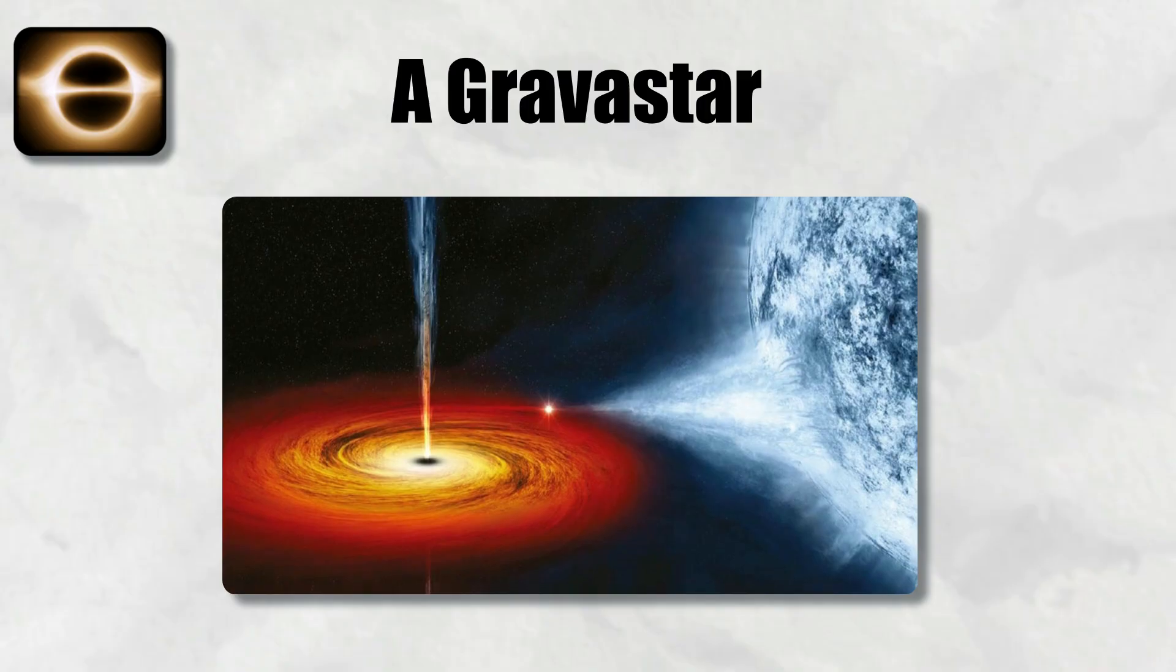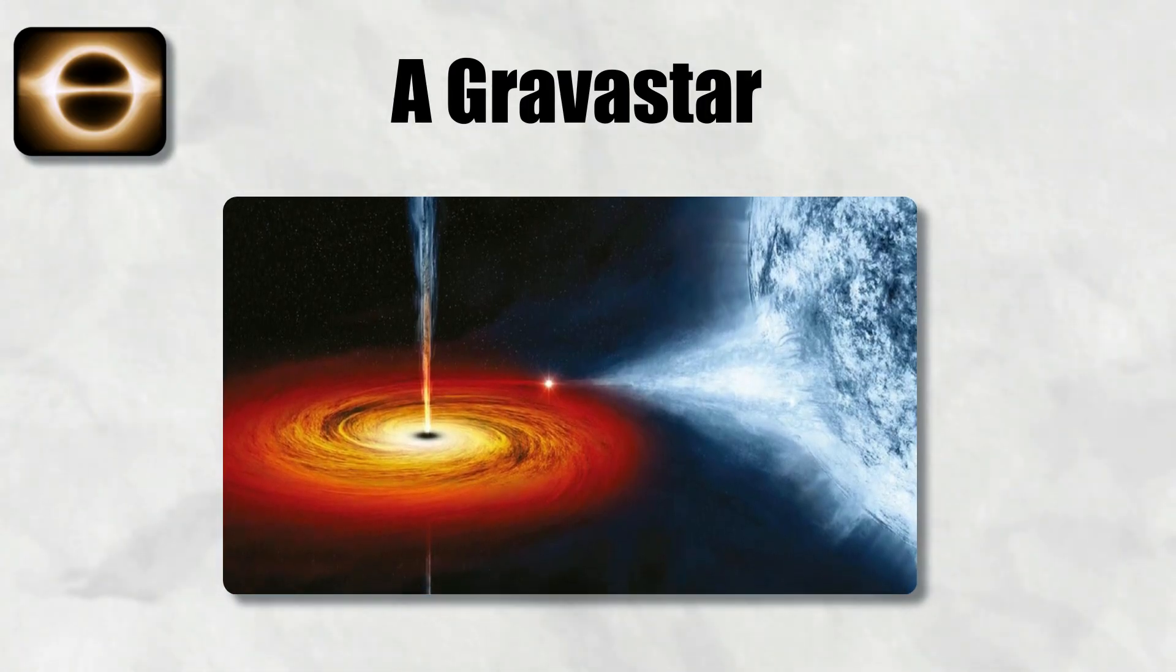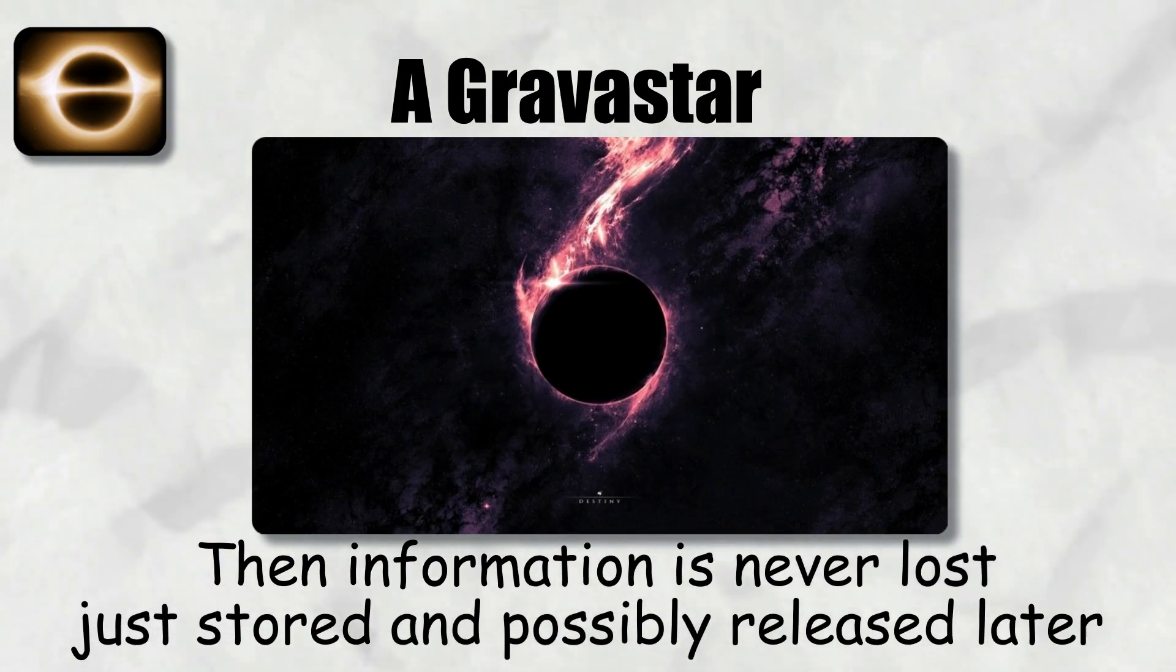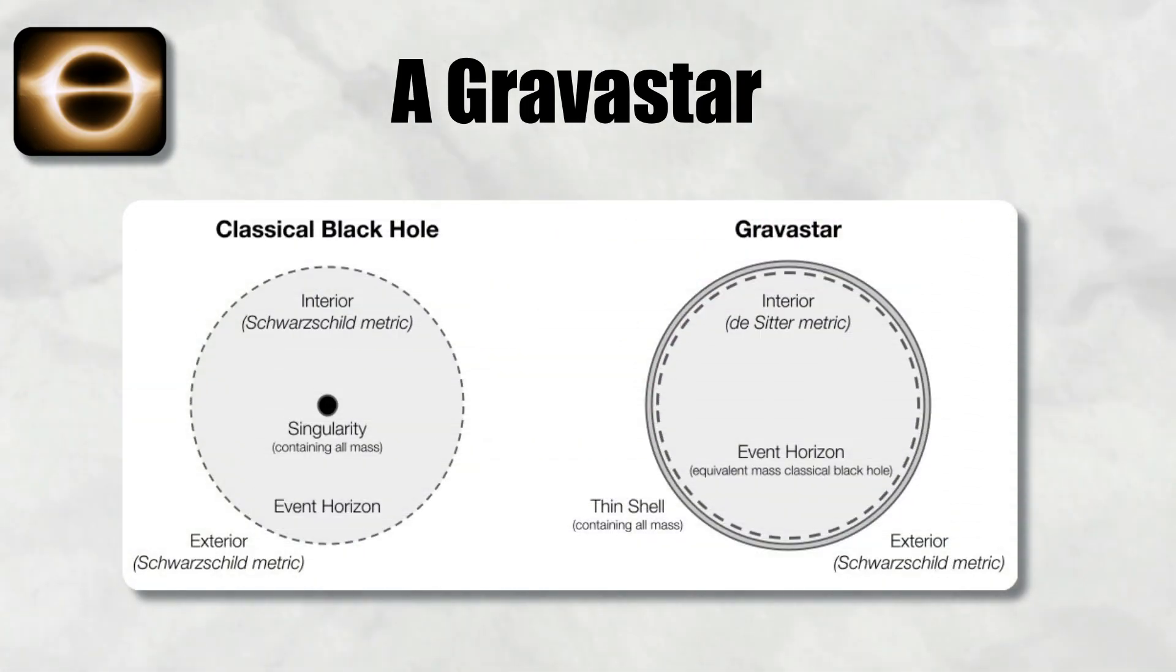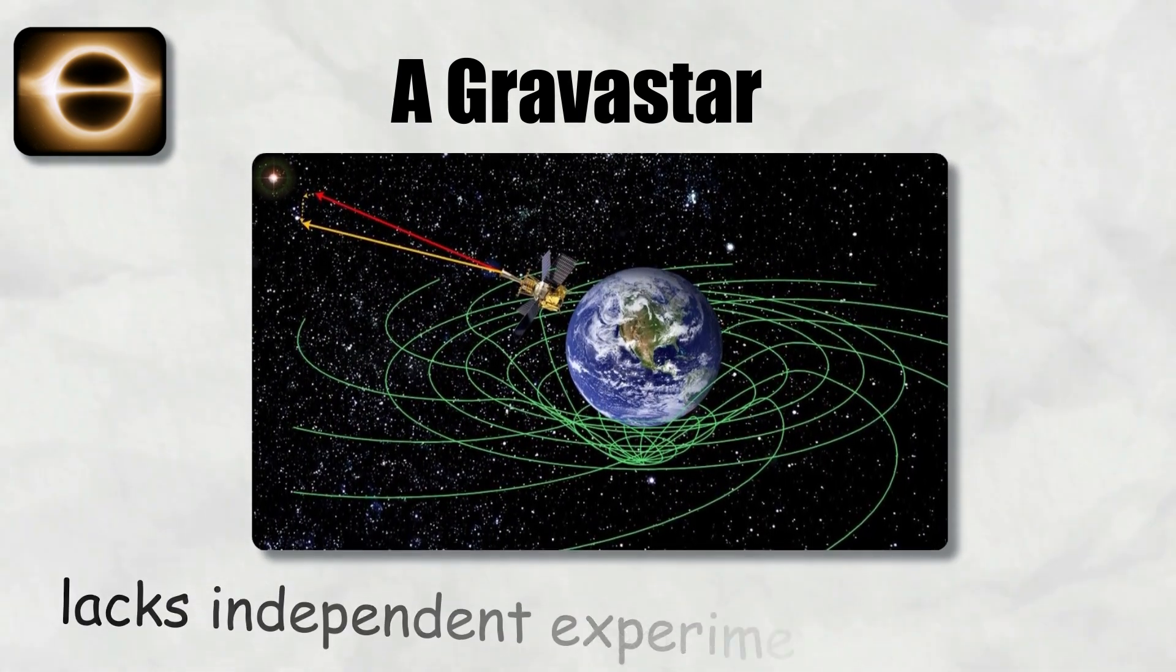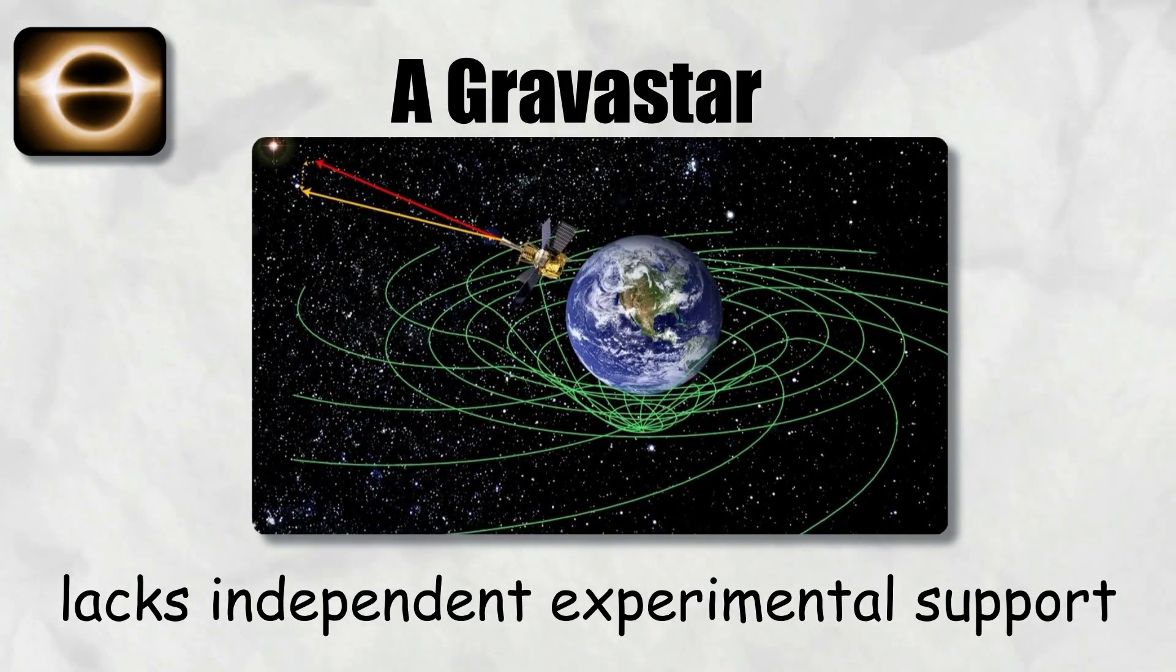The gravastar idea is appealing because it sidesteps the information paradox entirely. If there is no horizon, then information is never lost, just stored and possibly released later. However, the theory requires exotic states of matter and a very sharp phase transition in spacetime structure, which lacks independent experimental support.